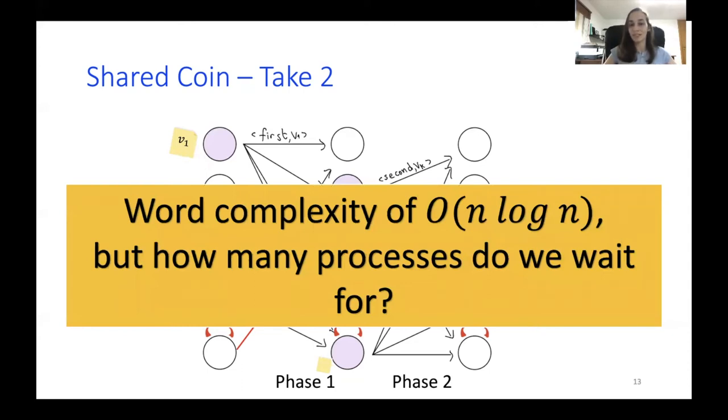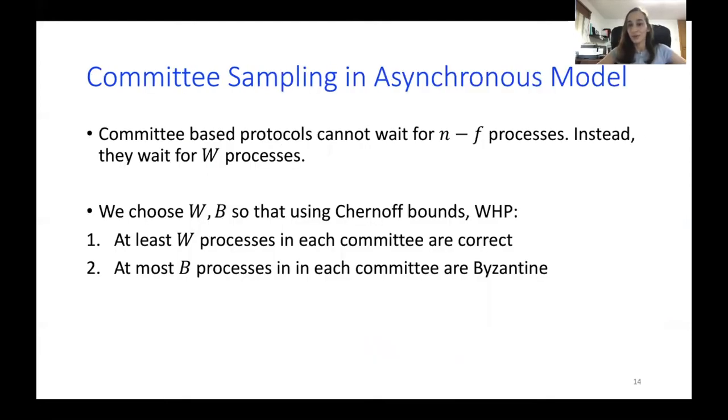So how many processes do we wait for in this case? In the previous algorithm, we waited for n minus f, which was totally okay. We have n processes, at most f are Byzantine. We will hear from n minus f messages. But now this is no longer the case because we don't know exactly how many processes are being elected to the committee, nor do we know how many correct processes are elected.